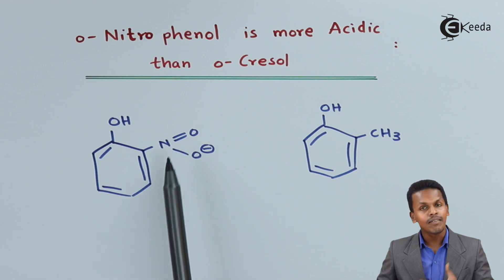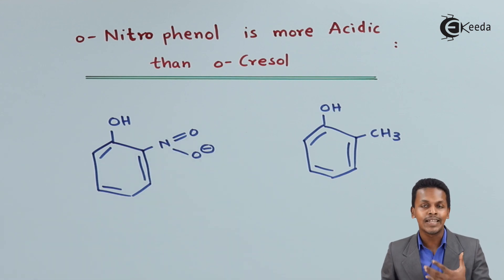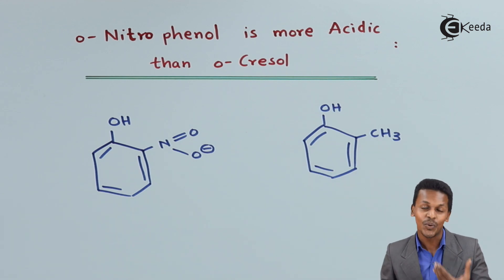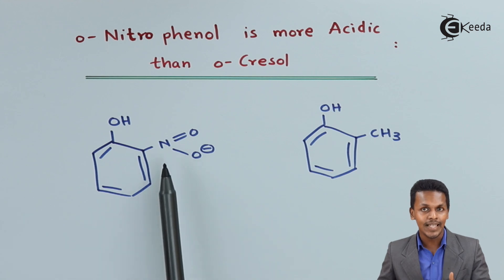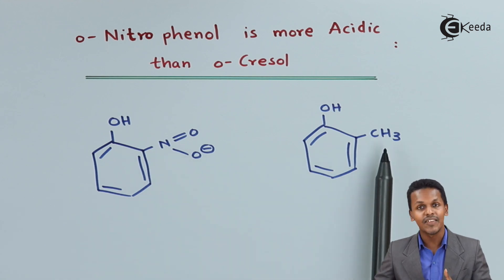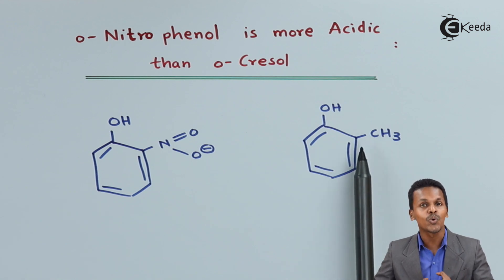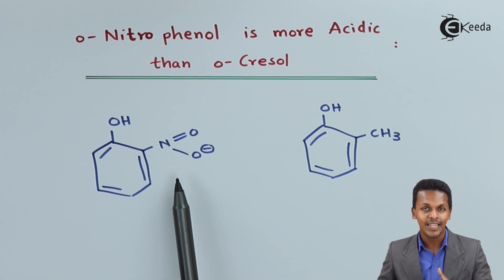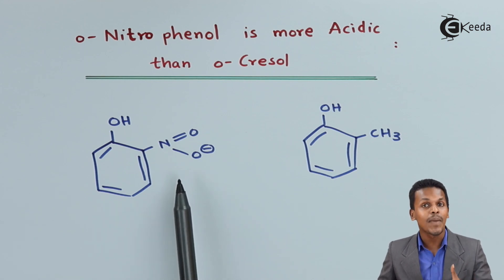The nitro group is an electron withdrawing group, while CH₃ is an electron donating group. So the nitro group gives a minus I effect, while CH₃ gives a plus I effect because it has a tendency to donate electrons, whereas the nitro group, being an electron withdrawing group, gives a minus I effect.